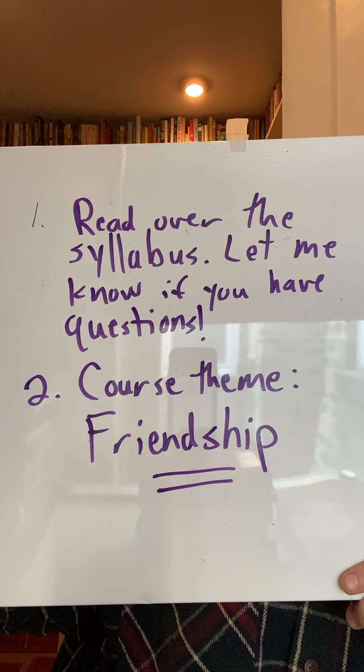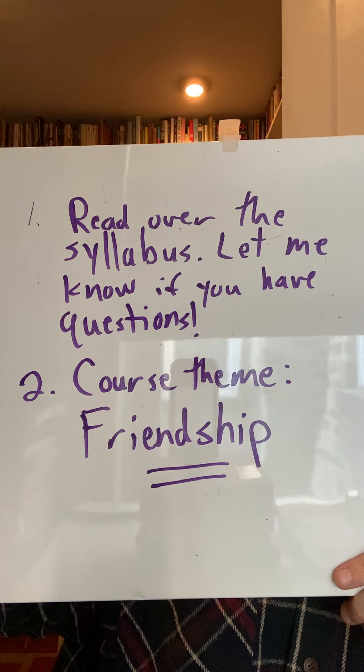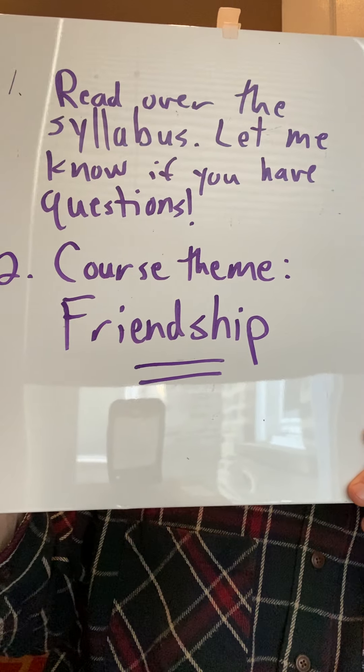I have a whiteboard here — those of you who have had me before will know that I do this because I miss my whiteboard in the classrooms. I have two things on here that you can think about for this week. First, read the syllabus and let me know if you have any questions. Second, I wanted to mention the course theme. English 102 is a research writing class, which means every paper we do will use some kinds of outside sources, with the exception of the first one. Everything else is a research paper, which means we'll be going through MLA format again. The theme I noticed as I was putting together the readings is friendship.